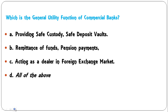Which is the general utility function of commercial bank? Options: providing safe custody and safe deposit vaults; remittance of funds and pension payments; acting as dealer in foreign exchange market; or all of the above? All three come under general utility function of commercial banks. So D is the correct answer. In the main examination, you may find one correct answer among all wrong ones, so I have included all three so you can remember them.